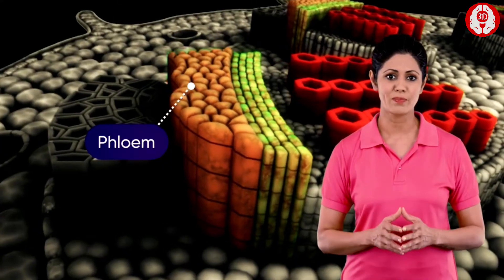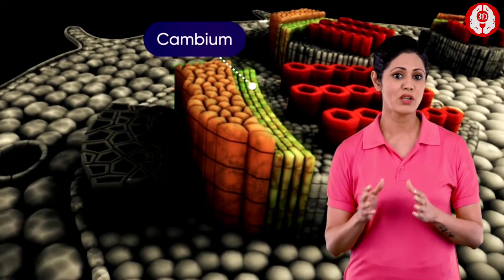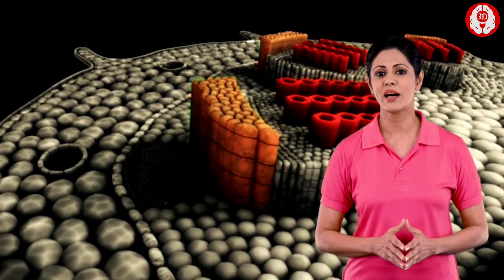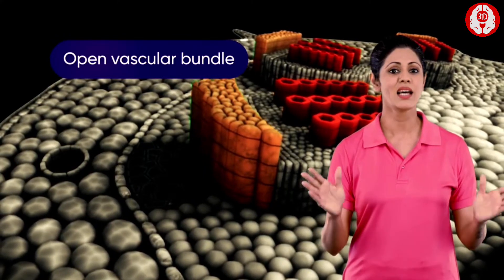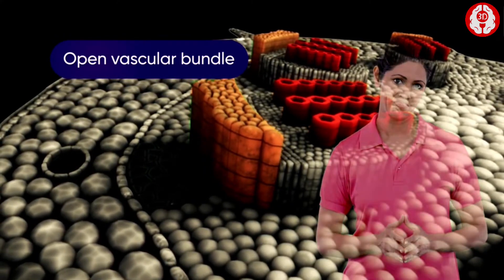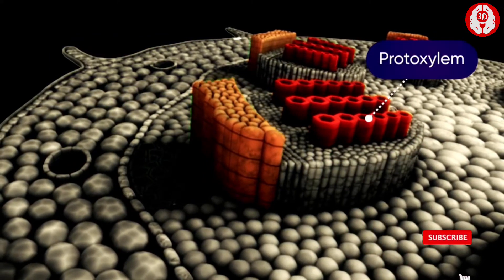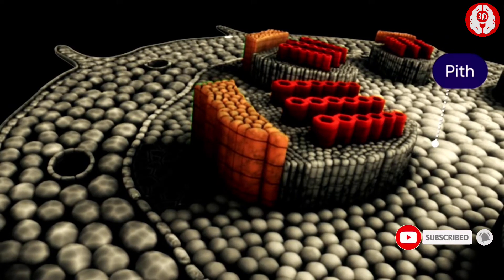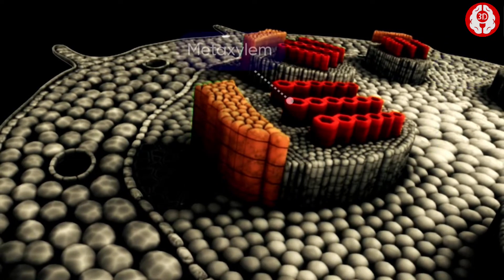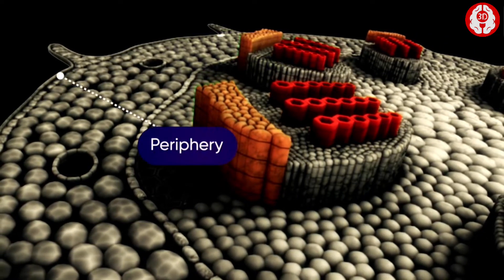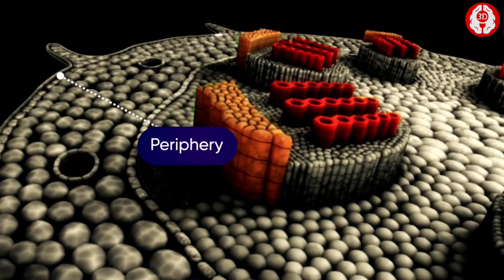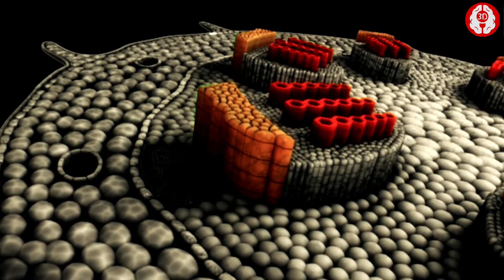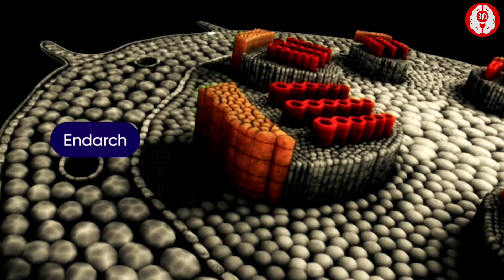The xylem and the phloem being separated by cambium — a lateral meristem — the vascular bundle is described as open. The protoxylem lies on the inner side towards the pith, and the metaxylem lies towards the periphery. Hence the xylem is described as endarch.